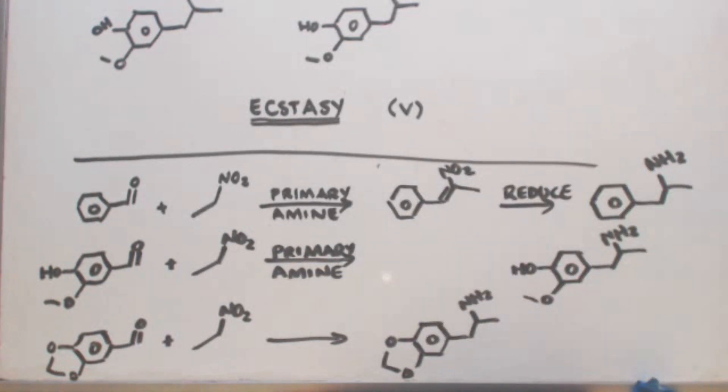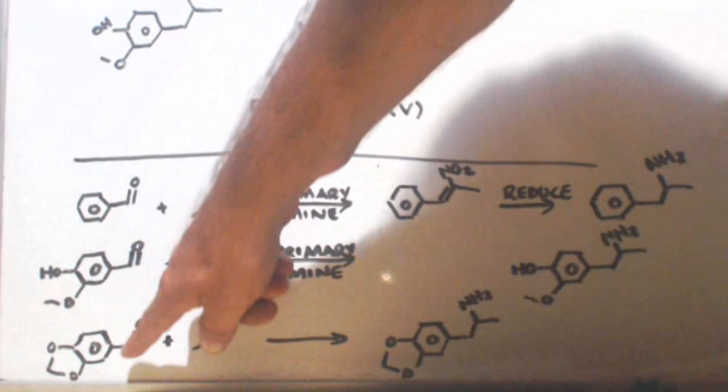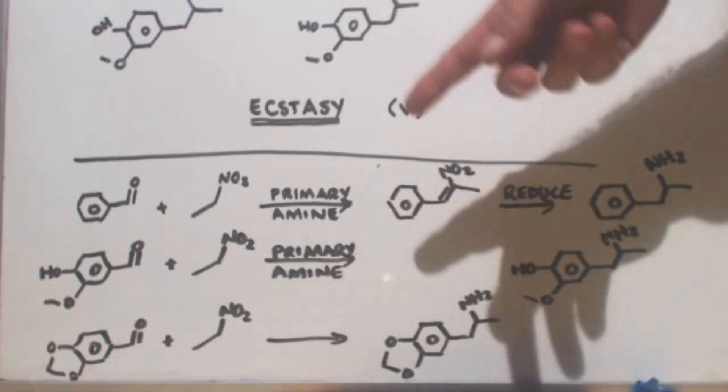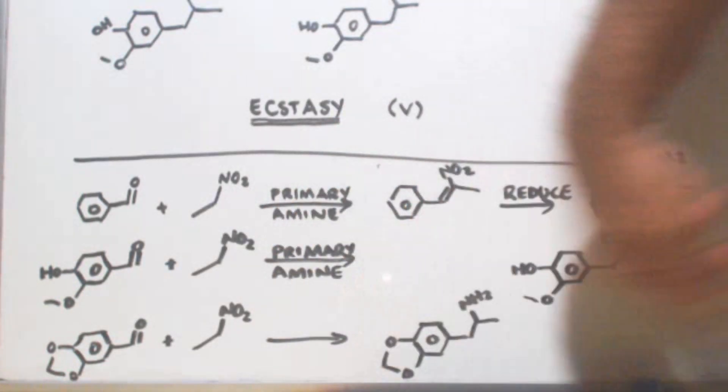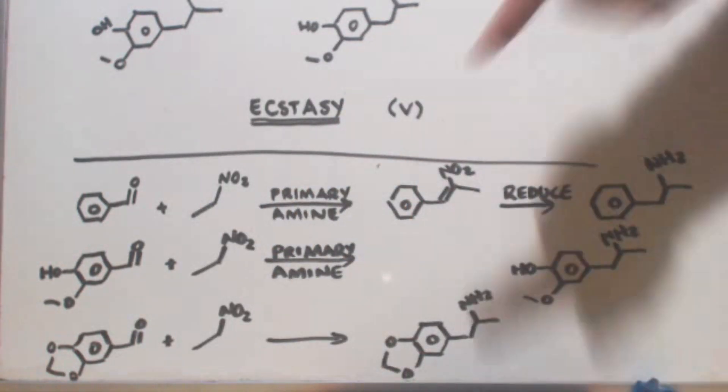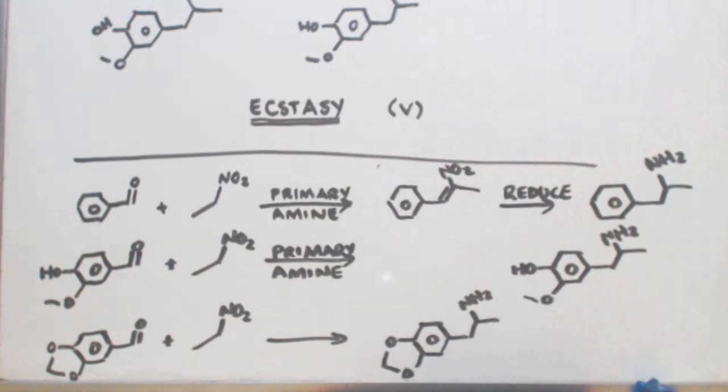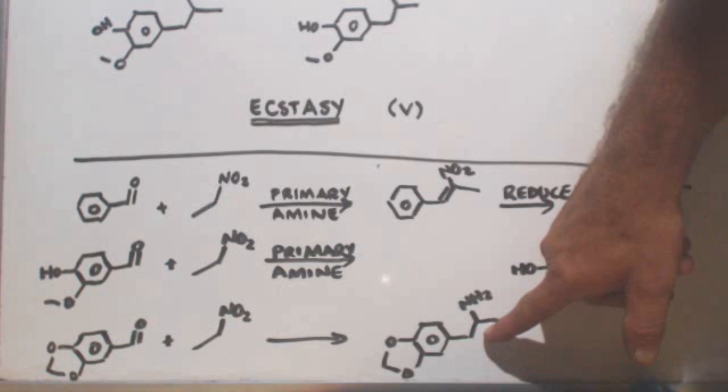Now, what if you wanted to make X, ecstasy, MDA? Well, instead of starting with benzaldehyde or benzaldehyde with that on it, you start with benzaldehyde with the methylene dioxy group. Do the same thing. Nitroethane, primary amine. You get your nitropropene, but you'd have your methylene dioxy connected on there. Then you reduce it, and you end up with MDA.